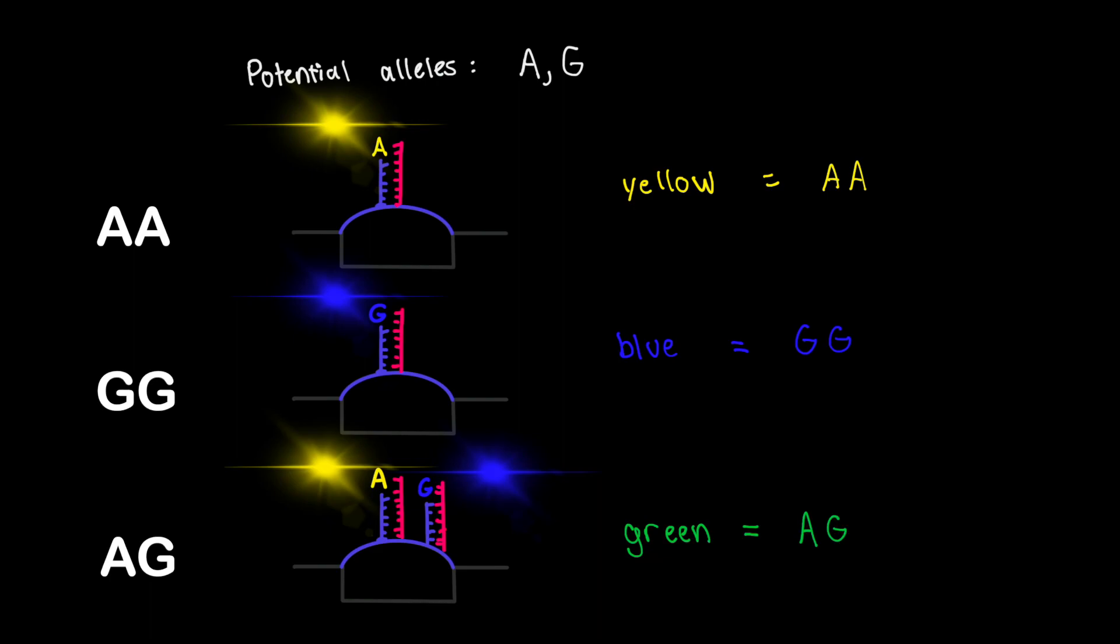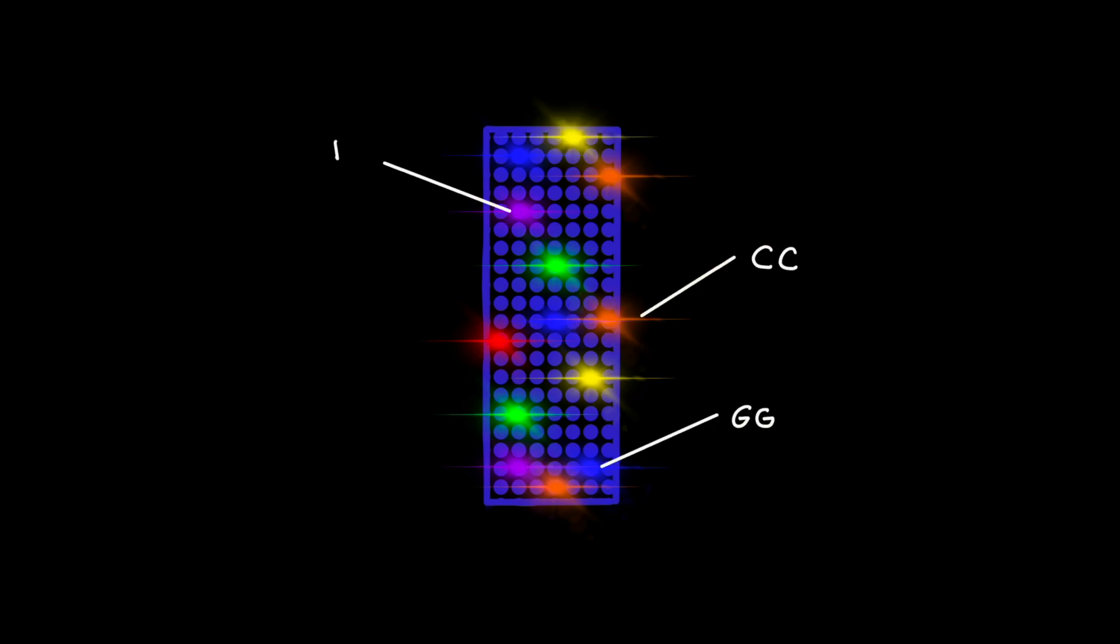And this process is happening simultaneously on each of the hundreds of thousands of beads on the SNP microarray. In the end, the allele at each locus is known with some level of confidence based on the color each bead is producing. That level of confidence varies depending on the strength and clarity of the light signal.